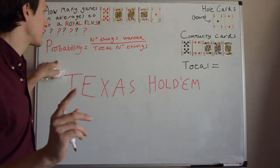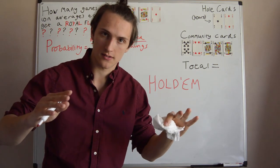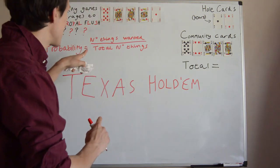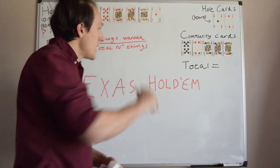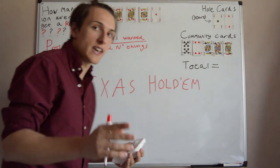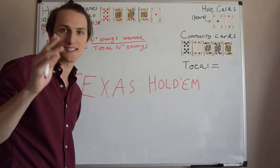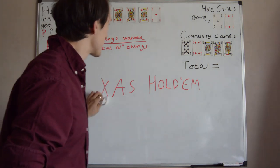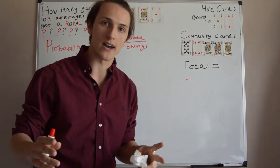One nice way is to define it as number of things wanted divided by total number of things. In this case the number of things wanted is the number of ways that we can make a Royal Flush, and the total number of things is the total 7 card hands that we can make. And I say 7 card hands because we're considering Texas Hold'em Poker because that's the most popular variety, so I'll give you a brief rundown of how Texas Hold'em Poker works.